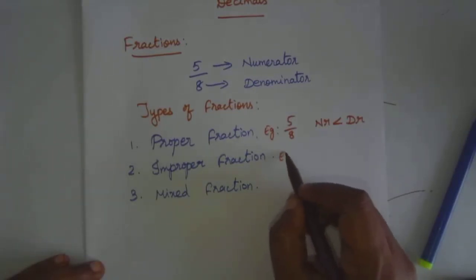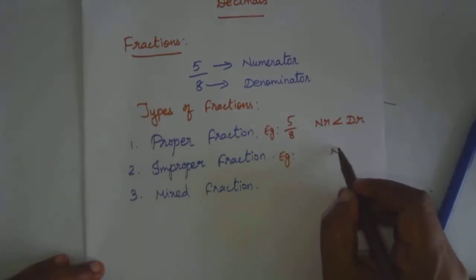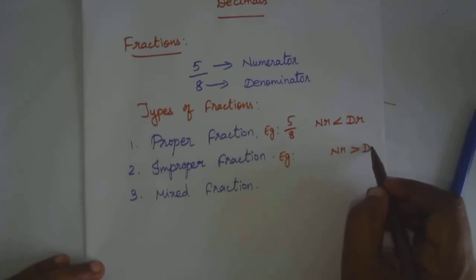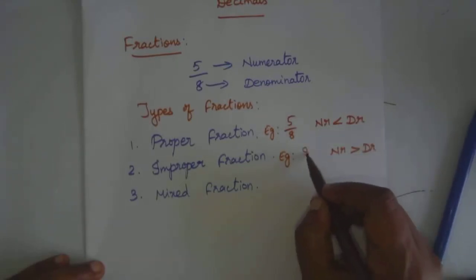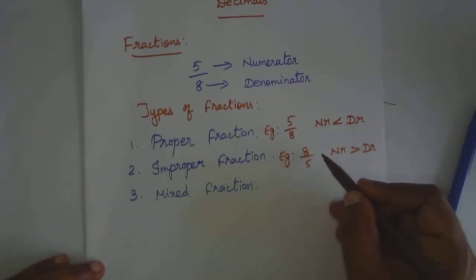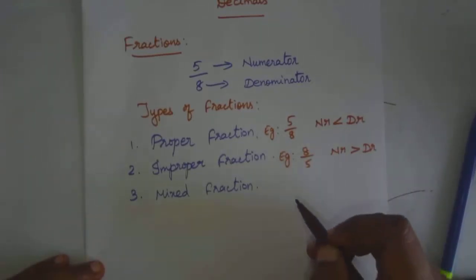Then improper fraction. What is improper? Numerator is greater than denominator. That is 8 by 5. 8 by 5 — 8 is the numerator. That is, 8 is greater than denominator 5. Okay.